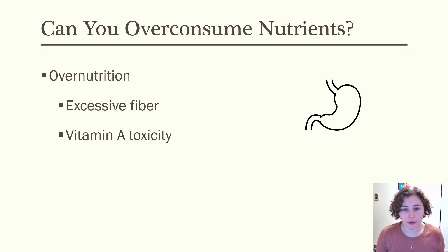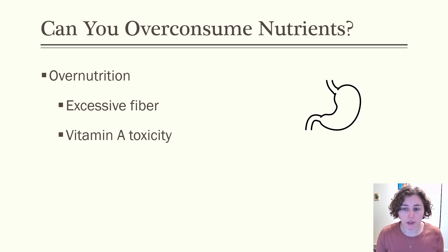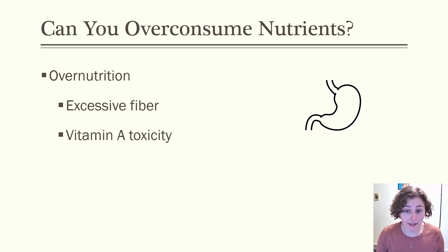Over nutrition, which is the overconsumption of nutrients, can be a concern since health can adversely be affected. An example here could be excessive fiber intake, which could lead to GI distress. Too much vitamin A, or vitamin A toxicity, can cause rashes and skin irritation.